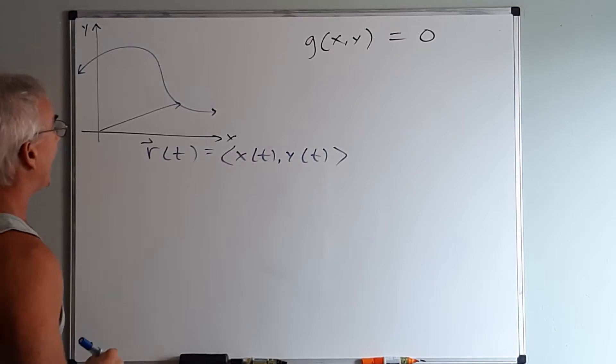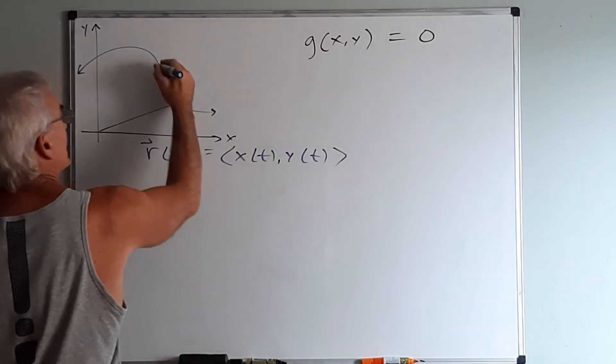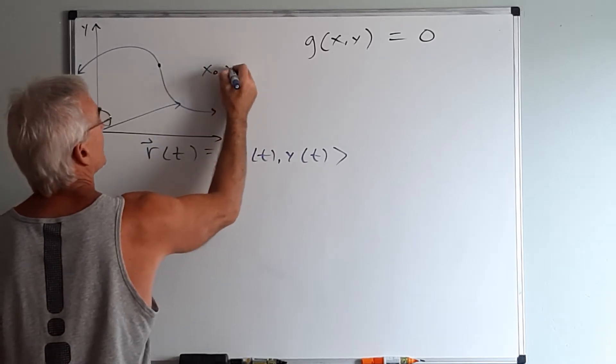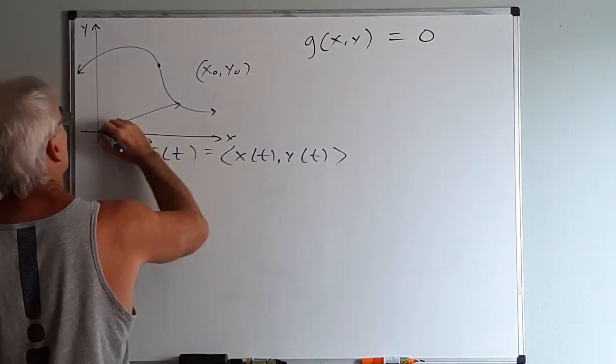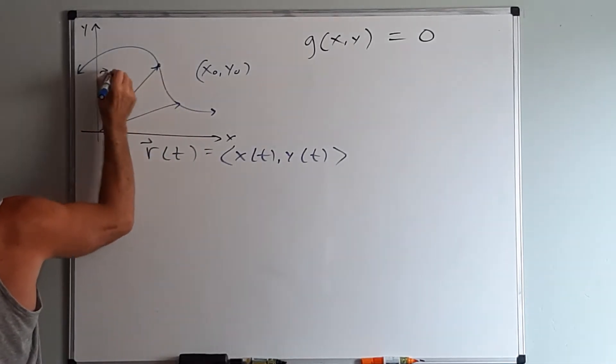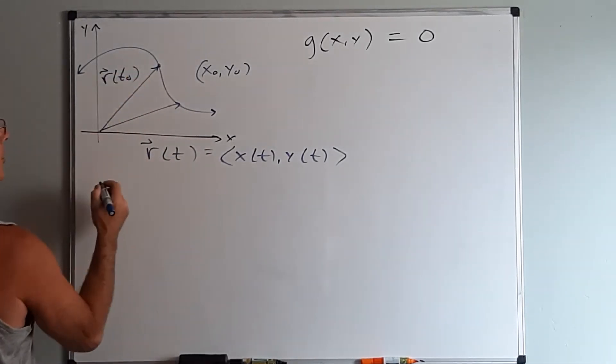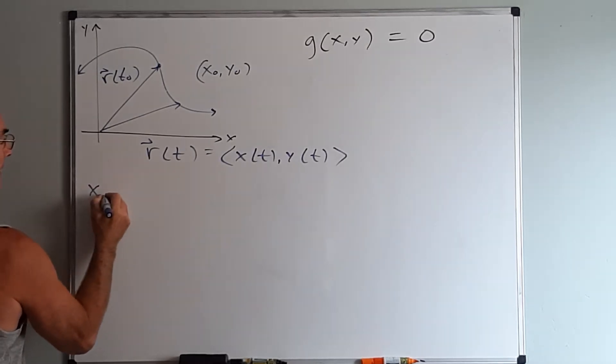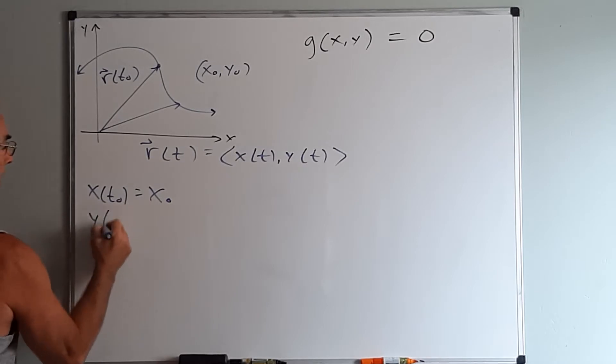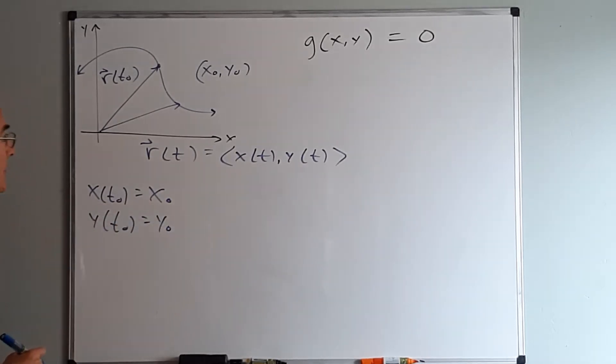Then if I said at any point on the curve, let's say we're looking at this point right here, let's say this point is x naught, y naught, and therefore this vector here would be r of t naught, where x of t naught is x naught, y of t naught is y naught.